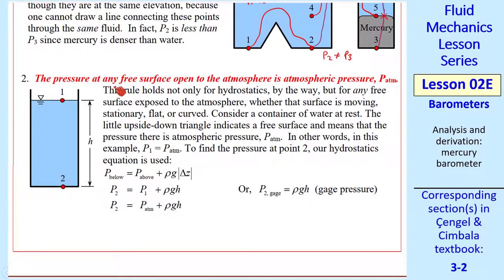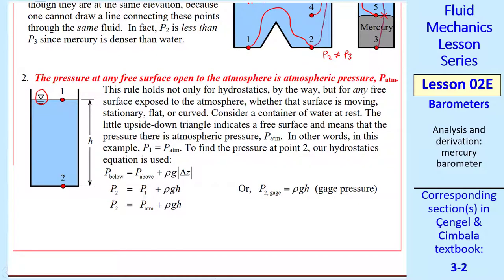Rule number two: pressure at any free surface open to the atmosphere is atmospheric pressure, p_atm. This rule holds not only for hydrostatics, but even for moving surfaces. This triangle symbol indicates that the surface is exposed to the local atmospheric pressure. To find the pressure here at point 2, we use our hydrostatics equation. p₂ (the one below) = p₁ (the one above) + ρgh. Since p₁ is atmospheric pressure, p₂ = p_atm + ρgh. This is an absolute pressure. In terms of gauge pressure, p₂_gauge is just ρgh since we subtract off the atmospheric pressure.